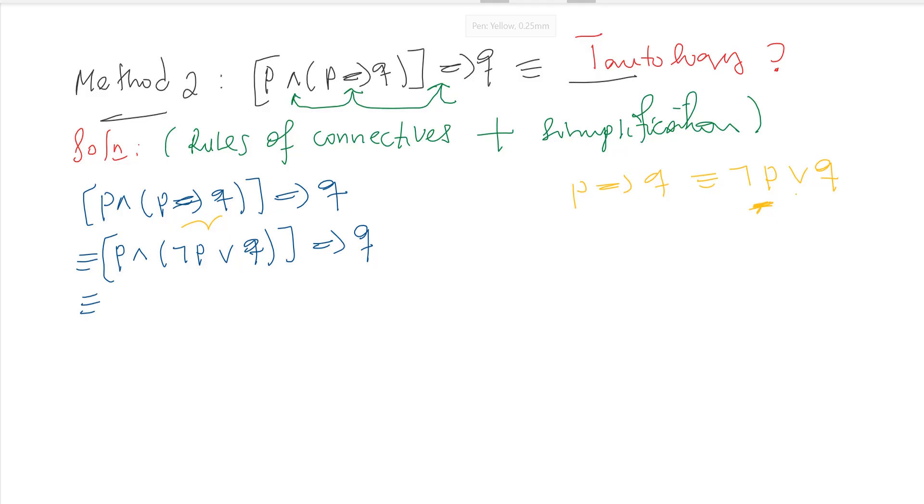So this is equivalent to p and put this bracket, negation of p or q, close this bracket, implies q. These two propositions, this is and, this is or.